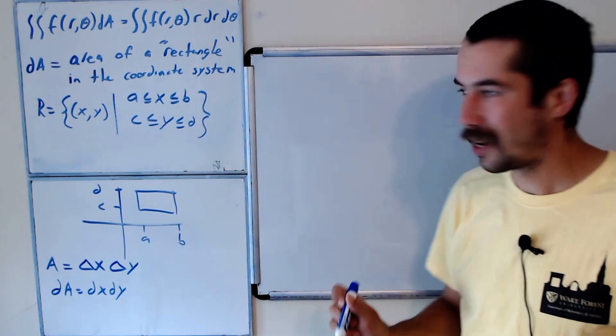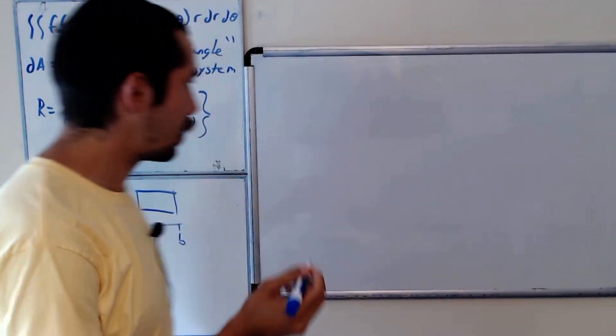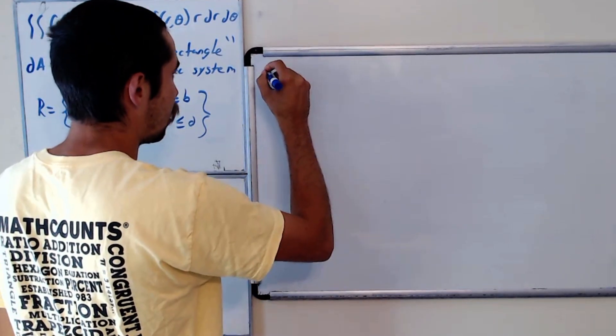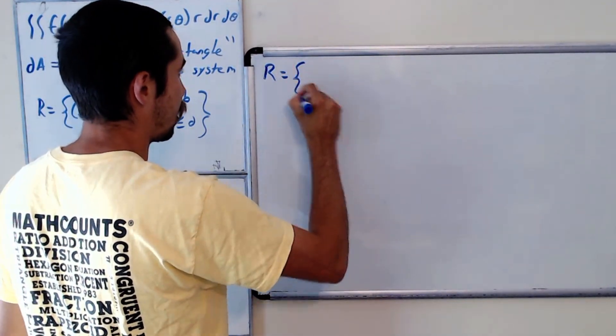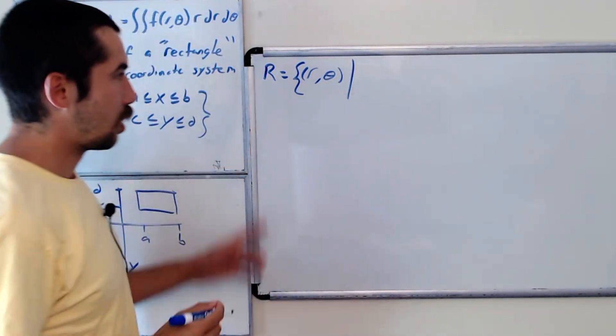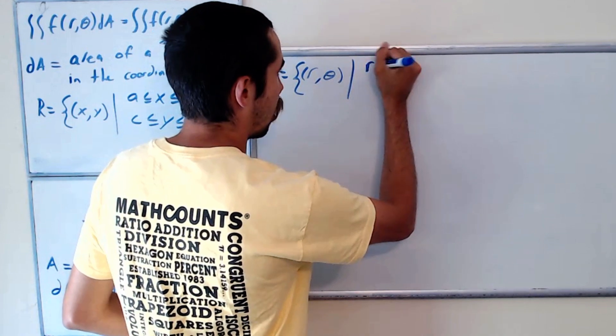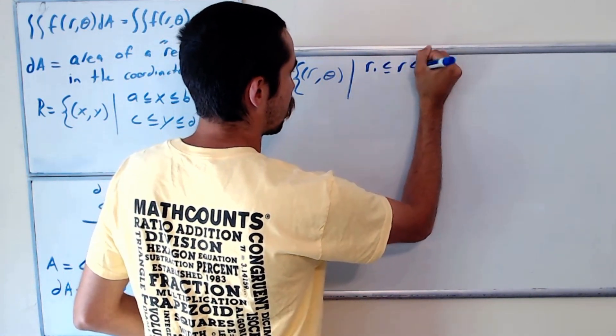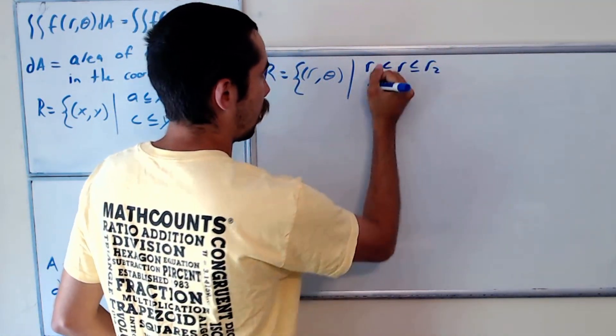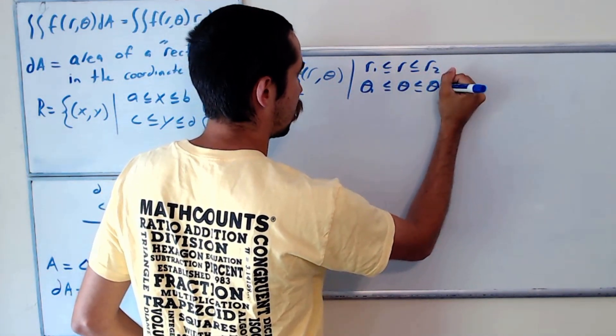But you're interested about polar coordinates. So what is a polar rectangle? Well, it's going to be the same idea. R would be the set of (r, theta) such that they're bounded by constants. So we'll say r1 is less than or equal to r less than or equal to r2, and theta1 is less than or equal to theta less than or equal to theta2.